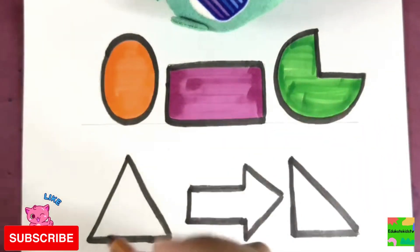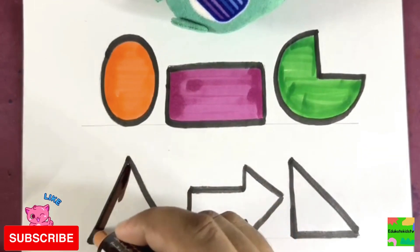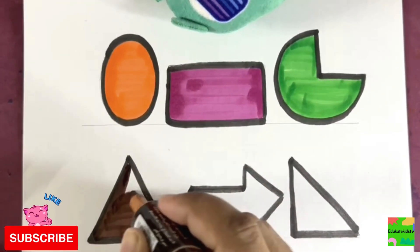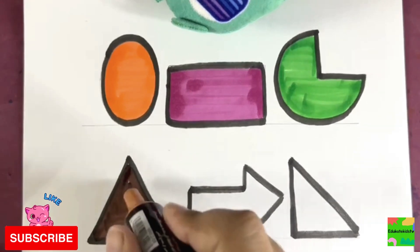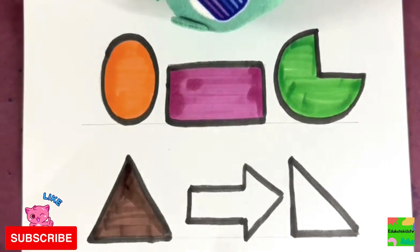Brown color - I will color this triangle brown color. Brown color triangle. Yellow, yippee!